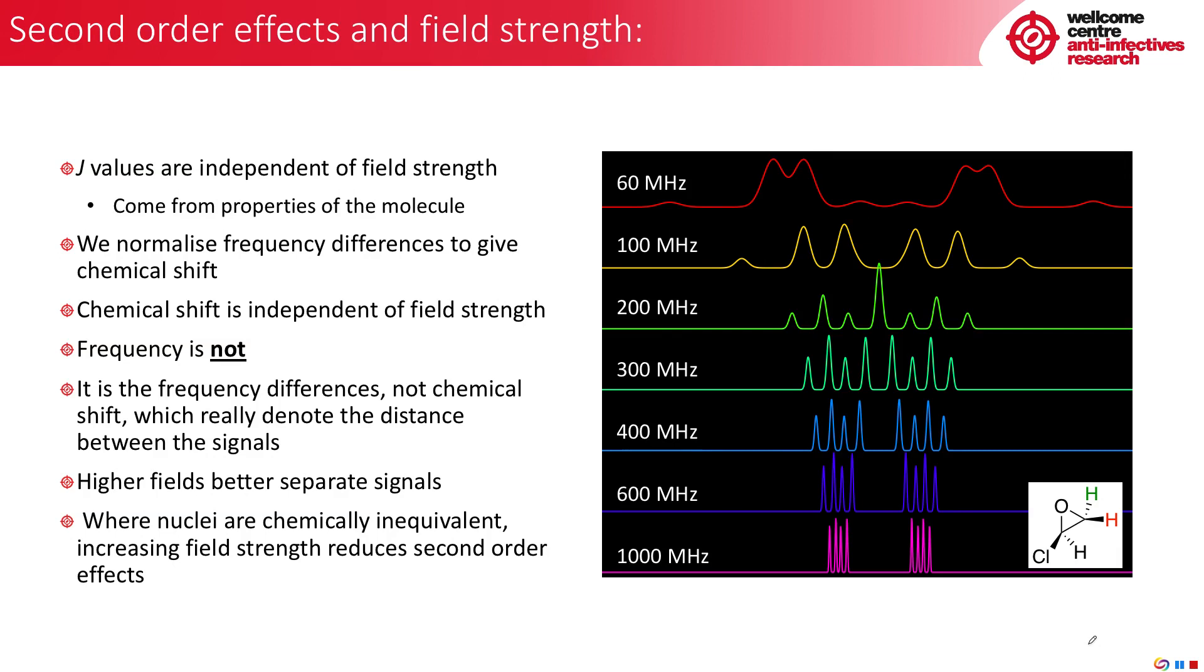Now, you're used to seeing spectra in a format where chemical shift is displayed and it is also independent of field strength. However, chemical shift is a useful normalization tool we employ where we essentially normalize out the difference in frequency. What your NMR spectra actually measures for the nuclei is a frequency and the frequency is not independent of the magnetic field. And it is the frequency differences, not the chemical shift differences, which actually denote the difference between the signals. And the way this shows up in your spectra is that you will see the standard chemical shift. But if you were to actually look, the frequency range contained within one to two ppm is different from a 400 megahertz spectrometer to a 100 megahertz spectrometer. So it would be four times greater.